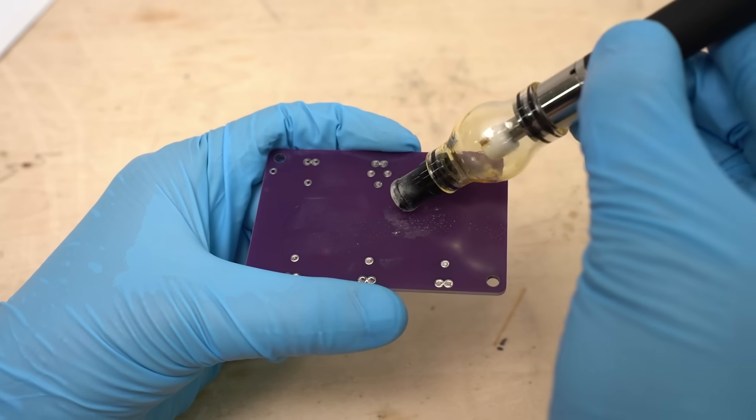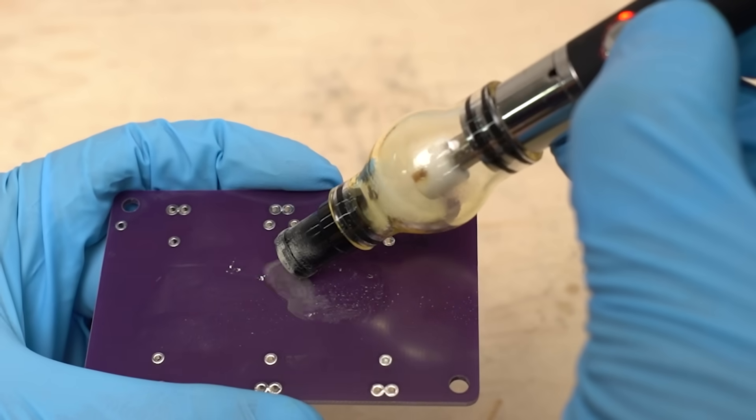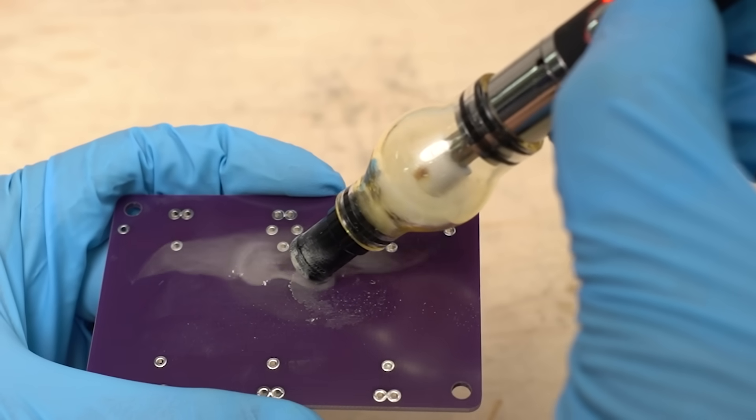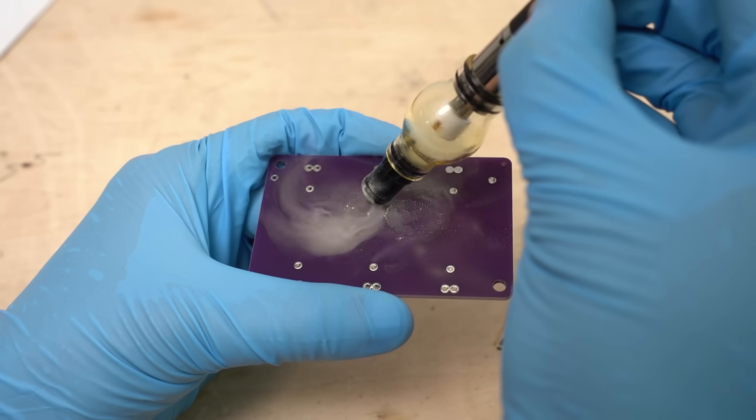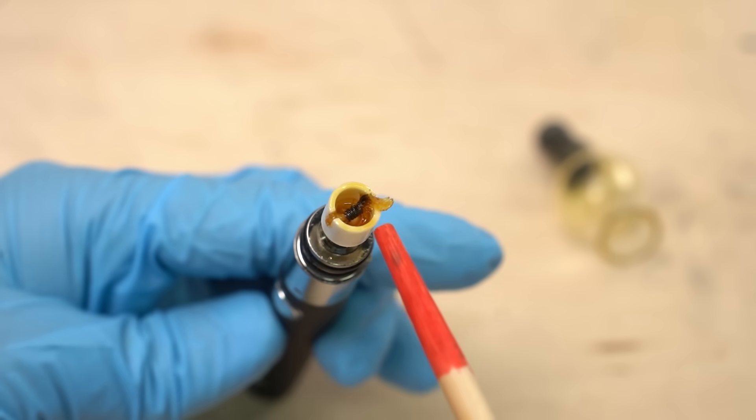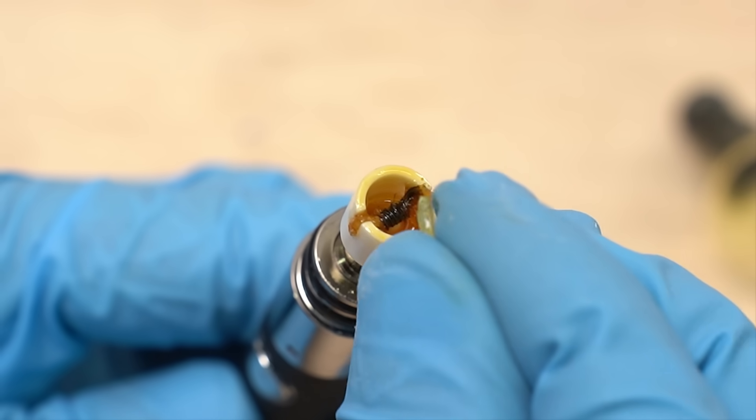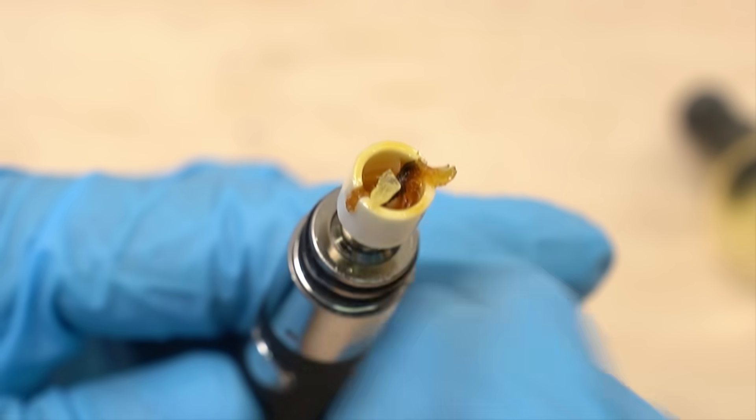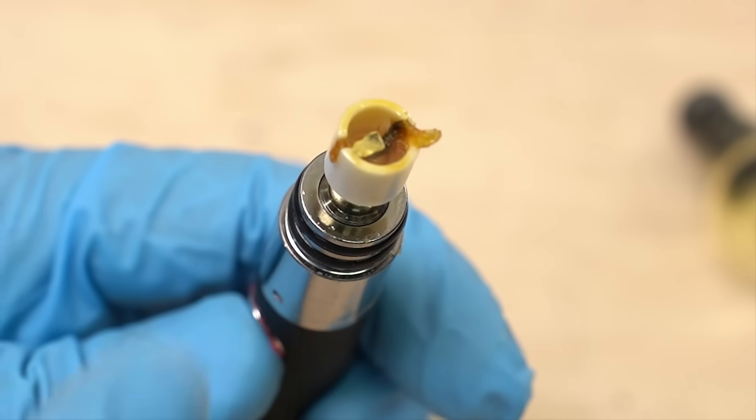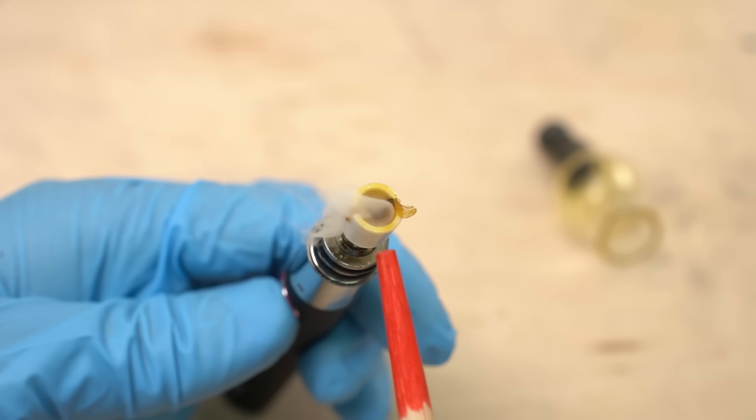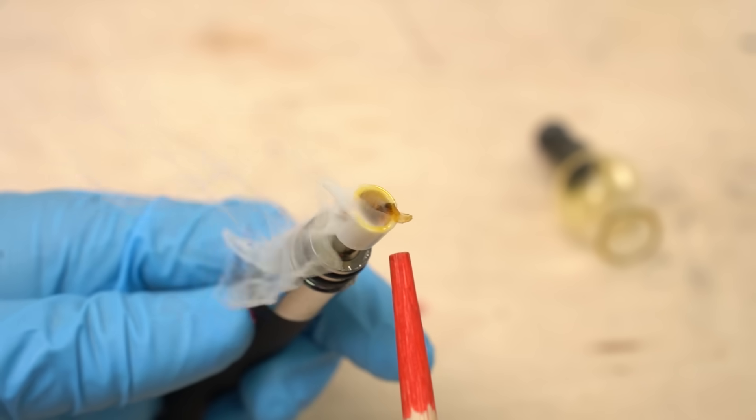When you press the button, the rosin melts and atomized inside and comes out like this. A lot of rosin came out. This is the tip of the device. This is where you put the rosin. Let's put the rosin in here and press the button. Then it starts to heat up and melt the rosin. Then you can apply the vaporized rosin onto the board.